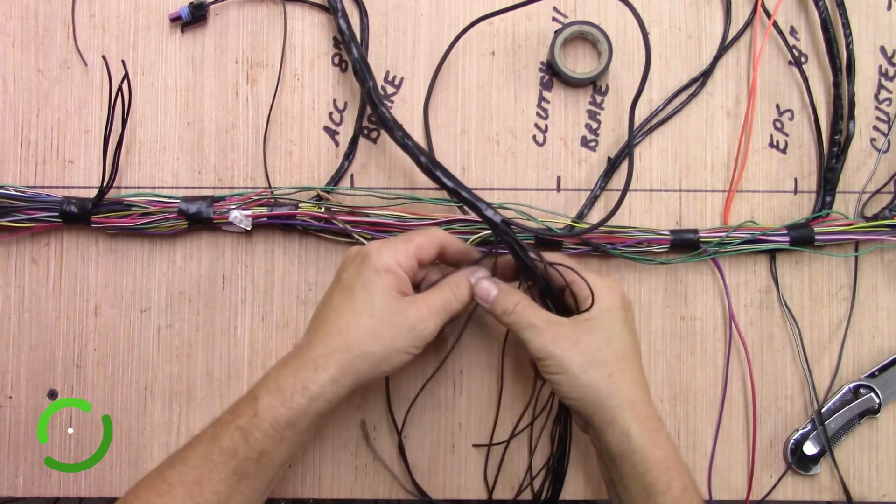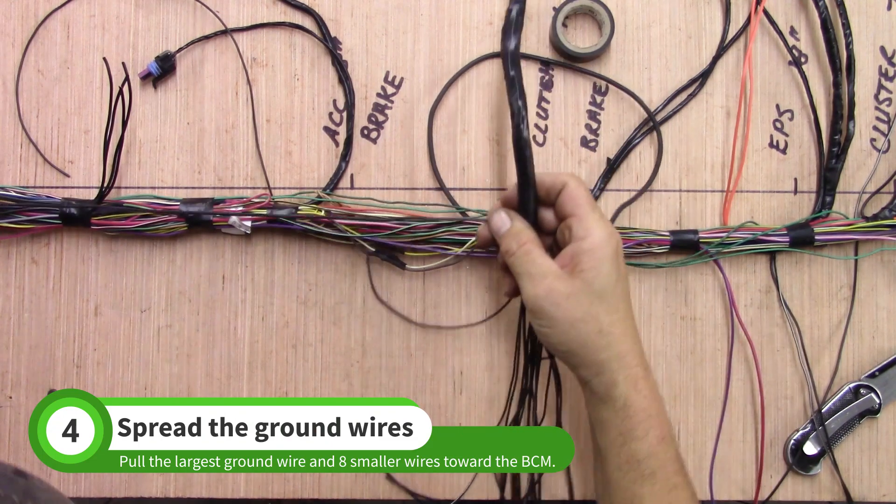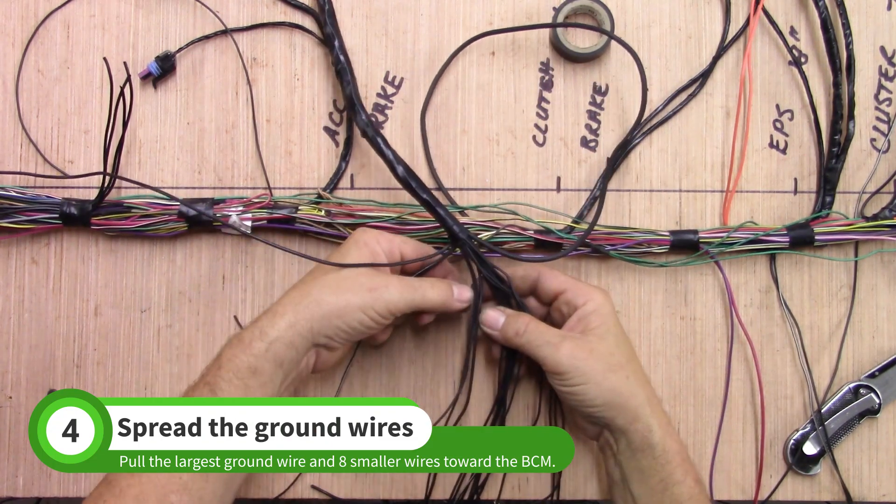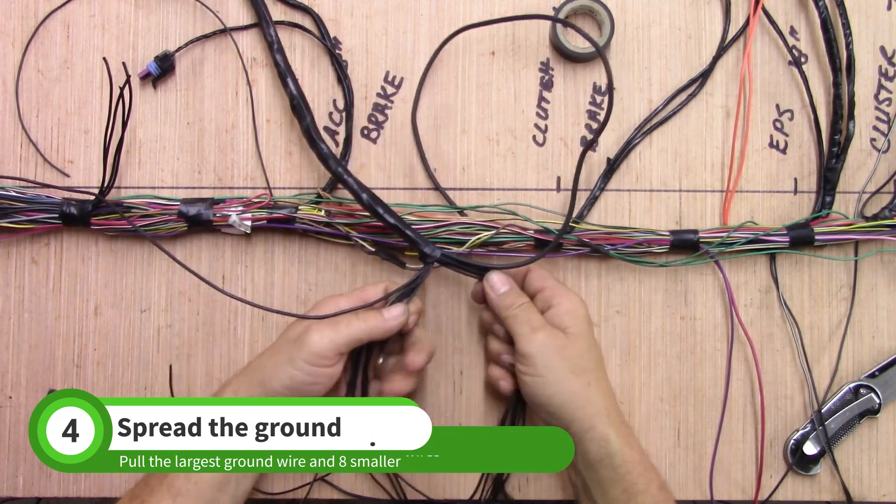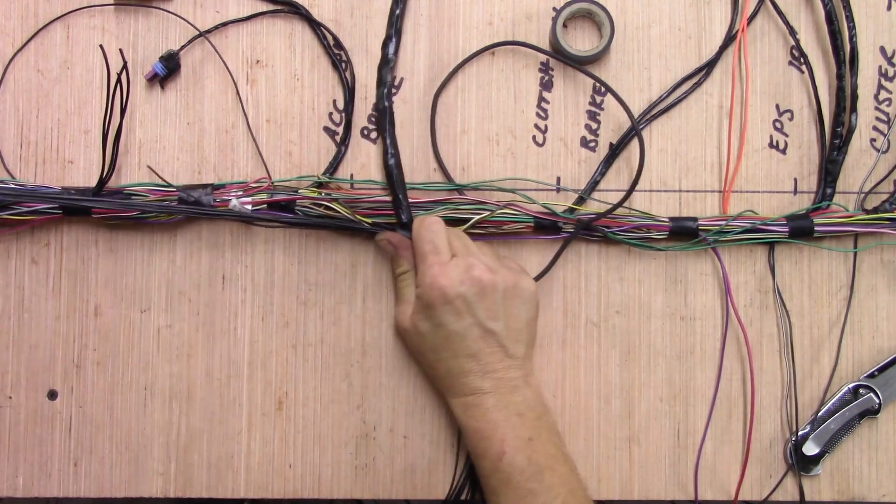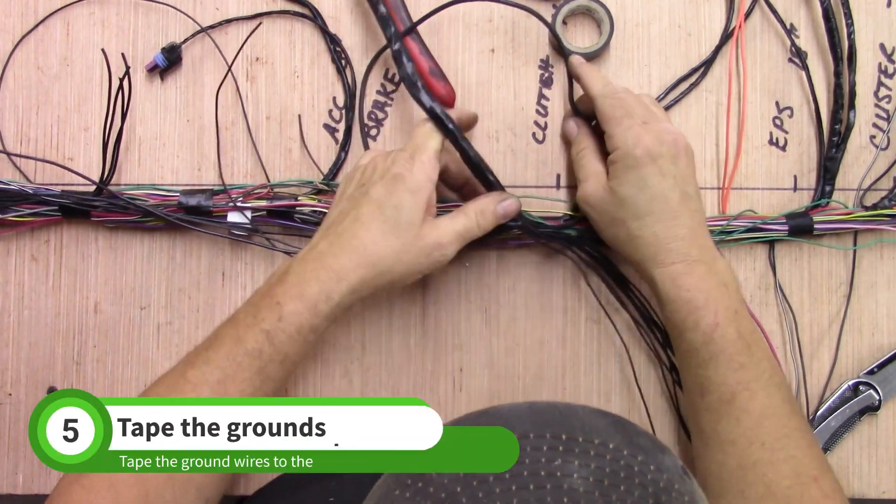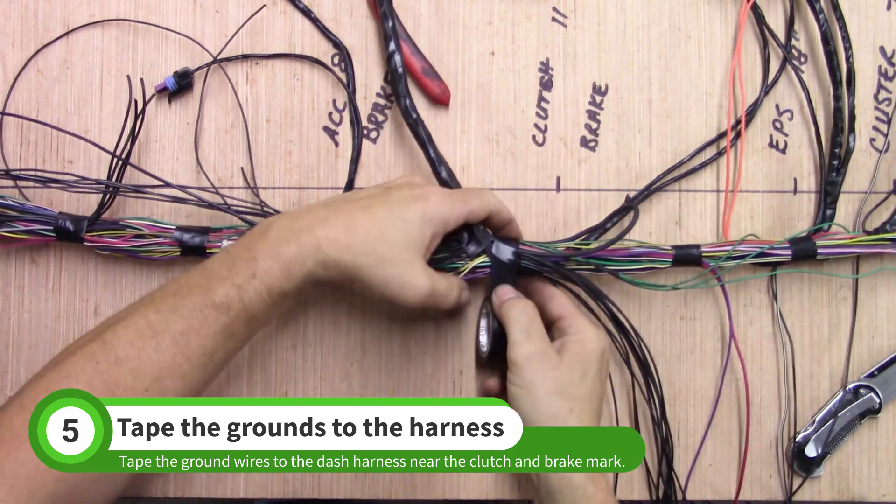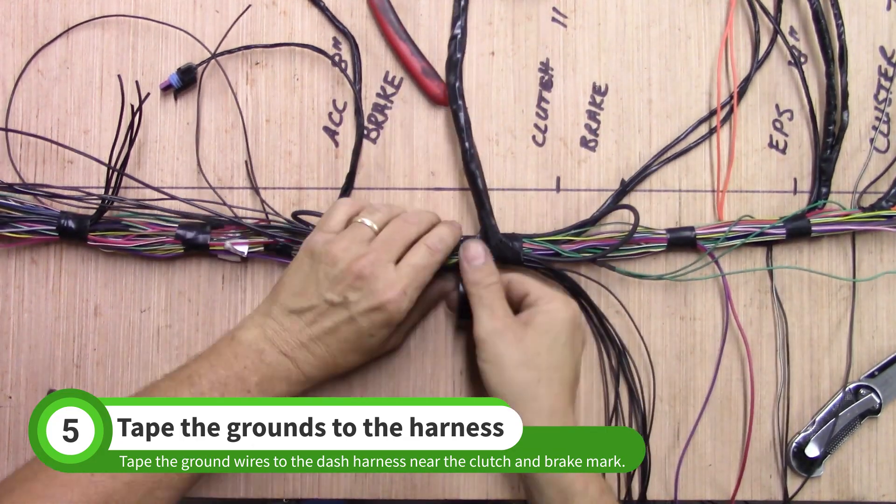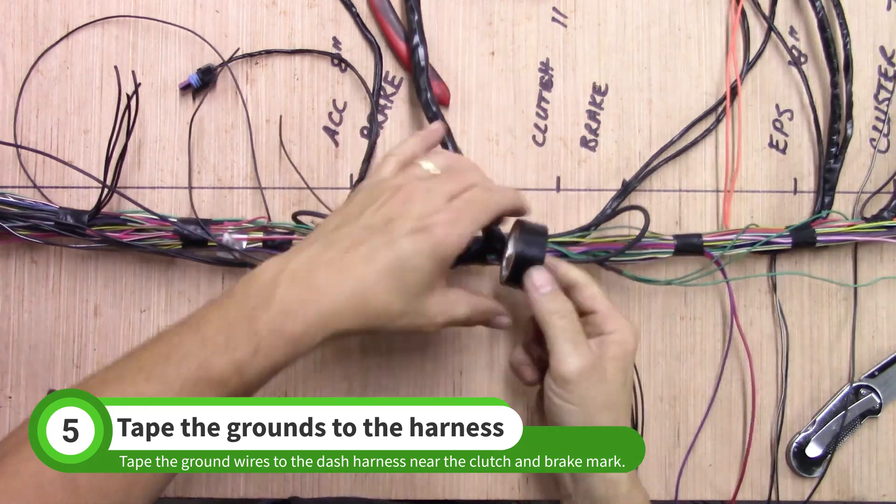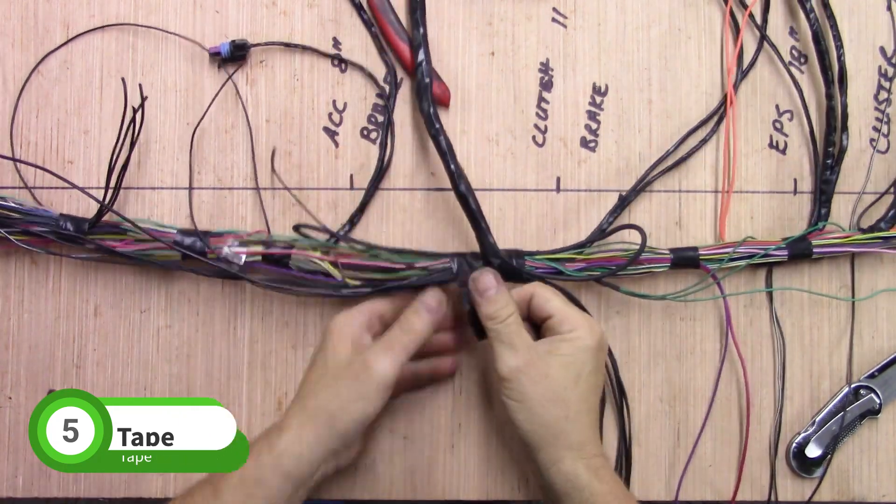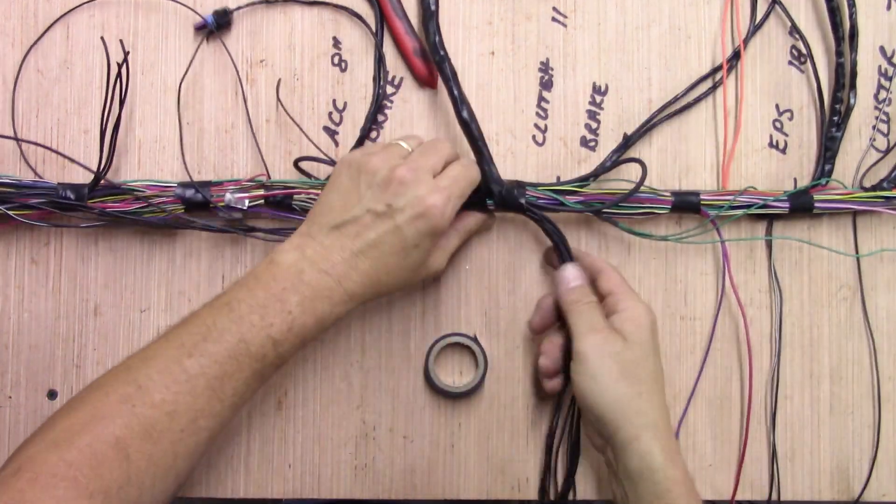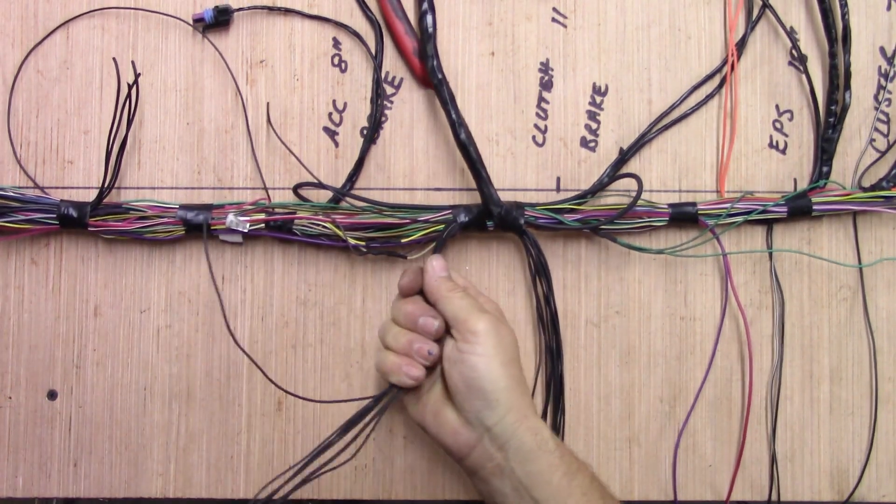Pull the largest ground wire toward the BCM. Then pull eight of the smaller wires out with the largest ground. Place the taped up grounds near the clutch and brake mark and tape it to the harness. After you tape the ground lug bundle to the harness, pull these wires down as shown to keep them from getting mixed up with the other grounds.